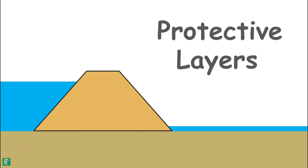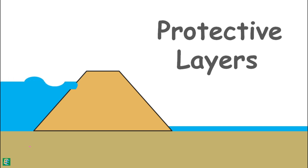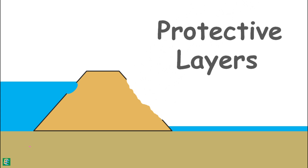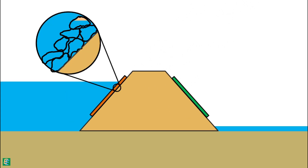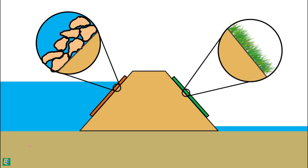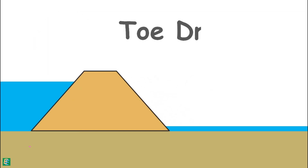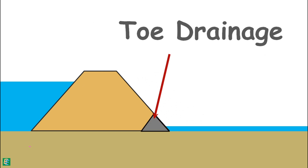The next component is the protective layers on the upstream and downstream slopes. The upstream slope may get eroded by heavy rainfall, so a protective layer — made of large rocks such as boulders and cobbles, or simply grass and vegetation — prevents the slopes from eroding. Another component is toe drainage: all seepage water exits at the toe of the dam, making it consistently wet.